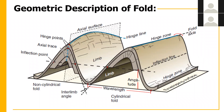Fold classification is also based upon the shape of the hinge line — cylindrical versus non-cylindrical fold. Then we have the fold axis: the axis of the rock along which folding has occurred. Originally the rock was horizontal, but now it has been folded. The axis along which folding occurs is the fold axis. This is your geometric description of a fold.